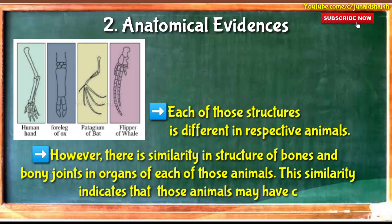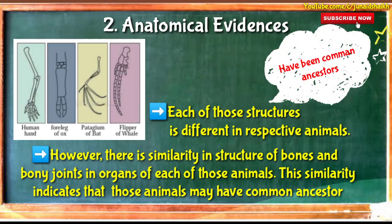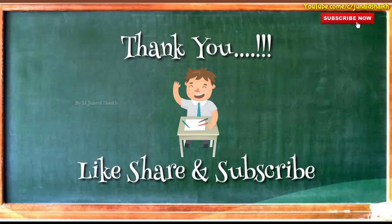Anatomy deals with the study of internal structure. इस picture में सभी different kinds of animals के samples हैं — human hand, foreleg of ox, pterygium of bat, और flipper of whale। ये सभी different kinds of animals के हैं, but इनमें काफी similarities दिखती हैं — इनके organ bones और bony joints में। तो यह इस बात का सबूत है कि ये एक ही common ancestor से originate और evolve हुए हैं। Hope friends, आपको morphological evidences और anatomical evidences समझ आए हों।